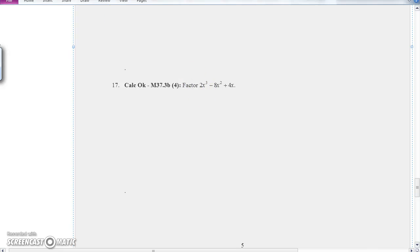If we're ever asked to factor, the first thing we should be looking for is common terms. Everything's even, so I know I can factor out a 2. And there's an x in every term, so I know I can factor out an x.